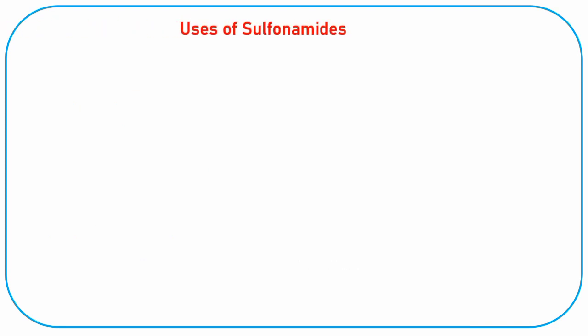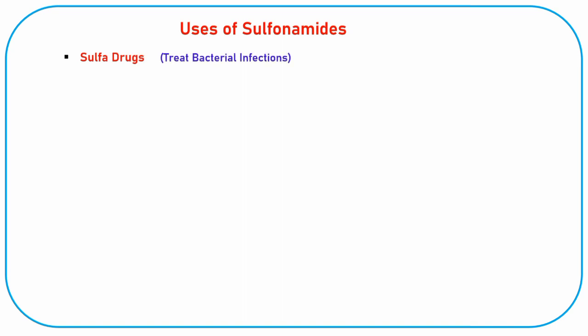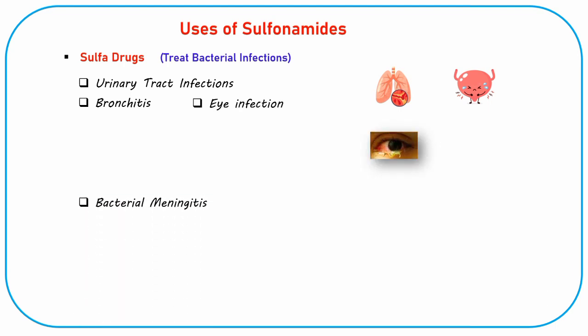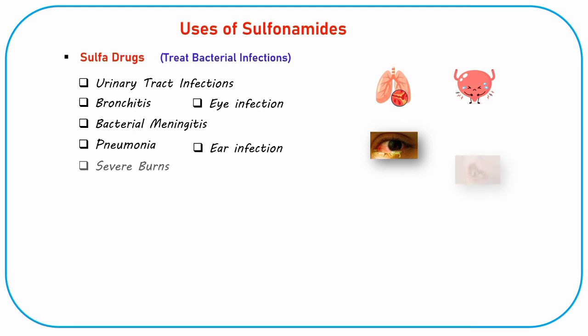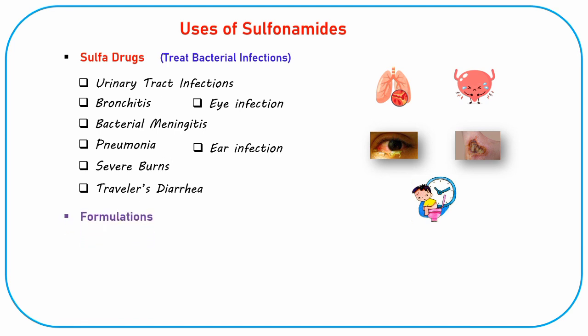Sulfonamides, also known as sulfa drugs, are used to treat different types of bacterial infections. They may be prescribed to treat urinary tract infections, bronchitis, eye infections, bacterial meningitis, pneumonia, ear infections, severe burns, traveler's diarrhea, and other medical conditions. They come in different formulations and may be taken as an oral, topical, vaginal, and ophthalmic medicine.